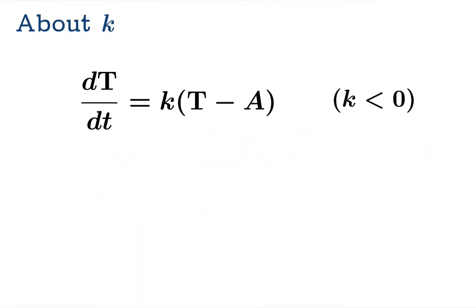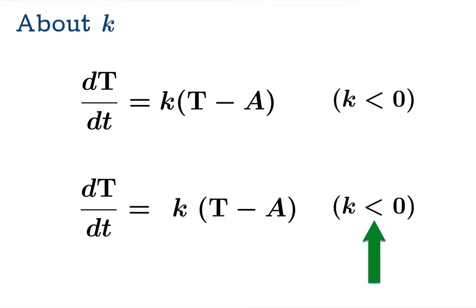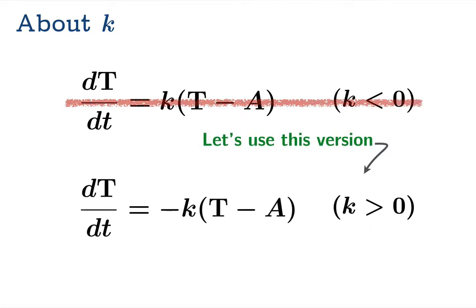Now, if you prefer your physical constants to be positive, well there's a remedy for this. If we want the constant to be greater than zero, then we can simply introduce a minus sign here in the equation. And this does exactly the same job as before, but now we can declare that our physical constant that depends on the object should be positive. So let's use this second form instead of the first form for the rest of the video.